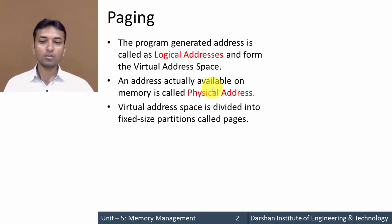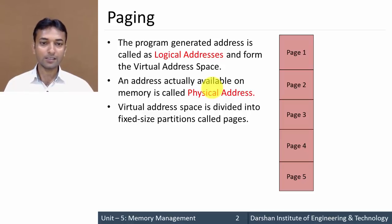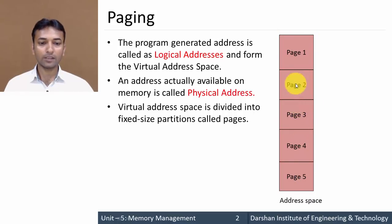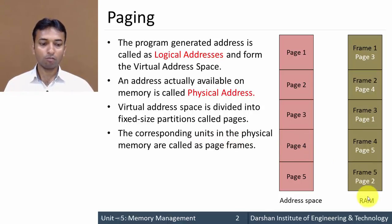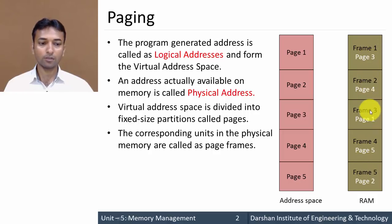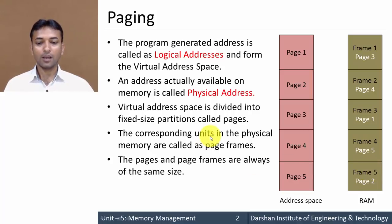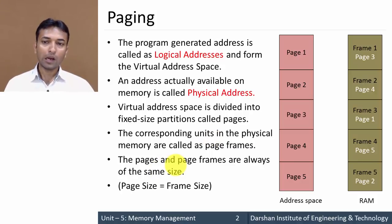The virtual address space is divided into fixed-size partitions called pages. For example, suppose we have an address space divided into five equal fixed-size partitions — all of these partitions are known as pages. The corresponding units in physical memory are called page frames, or simply frames. Physical memory (RAM) is also divided into fixed-size partitions, each called a frame, and the page size is always equal to the frame size.